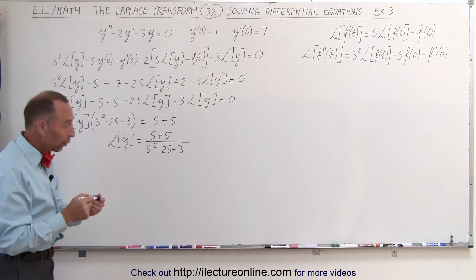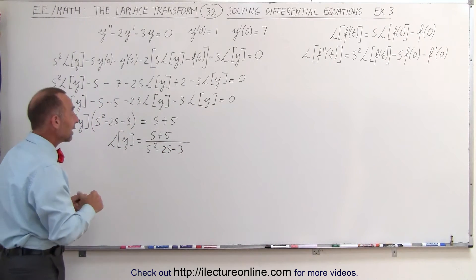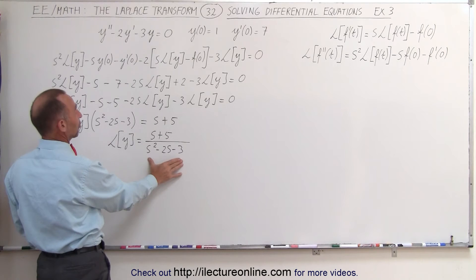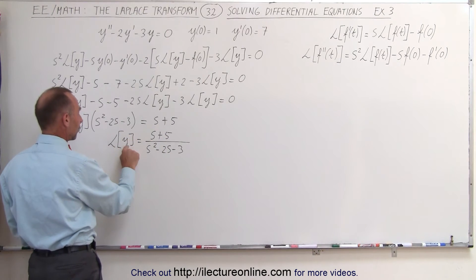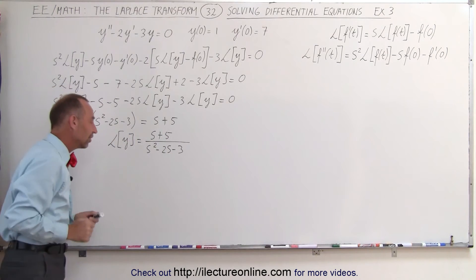Moving the minus s and minus 5 over gives s plus 5 on the other side. Then we divide both sides by this quantity. So we can say that the Laplace transform of y is equal to s plus 5 divided by s squared minus 2s minus 3. Now all we have to do is take the inverse Laplace transform of this to figure out what the function is equal to.